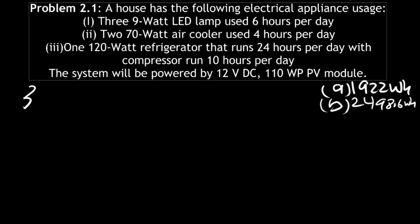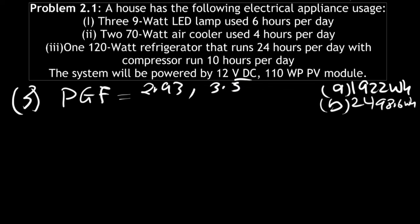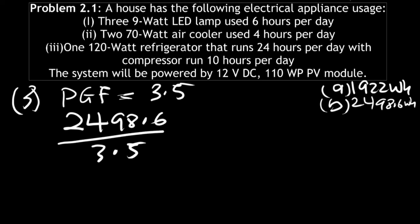In the third step, we will divide the total watt hours by the panel generation factor to get the total watt peak rating. This helps us find the number of panels needed. The panel generation factor varies by country — some countries have 2.93, some 3.5, some around 3.4. We will use 3.5, which is the panel generation factor for Oman. So we take 2498.6 divided by 3.5.